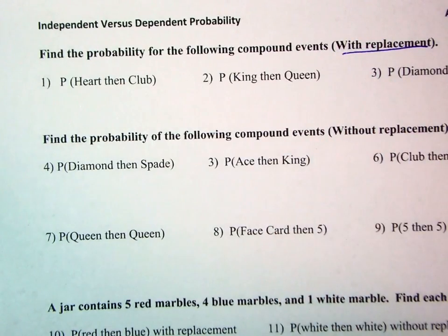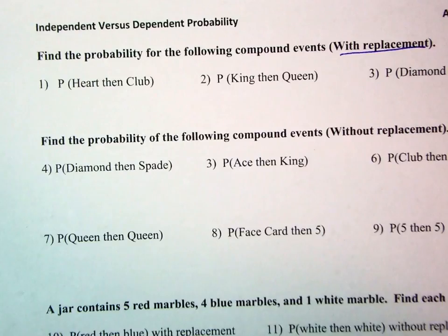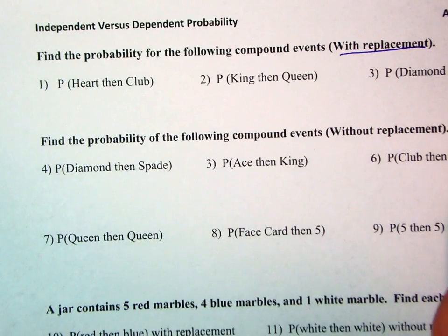The first set of problems talks about being with replacement. With replacement tells me that I'm not going to change my sample space, so I'm dealing with independent probability.